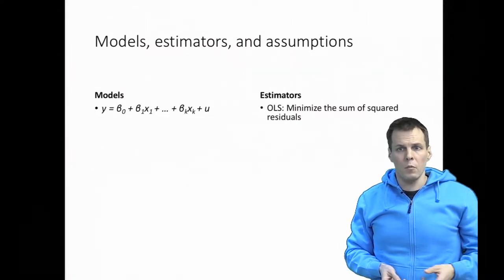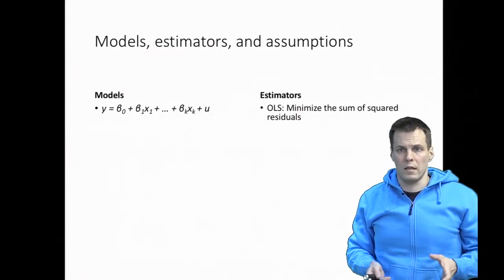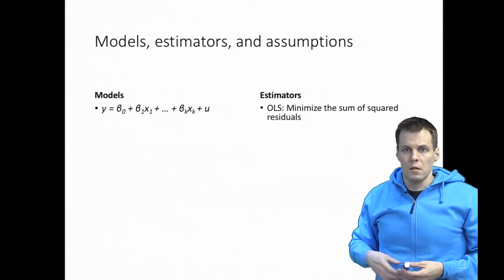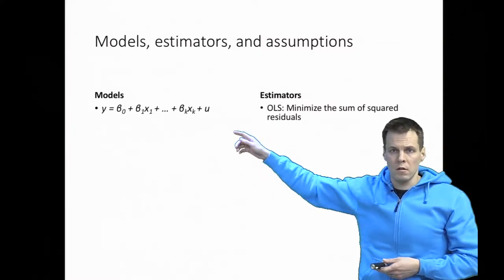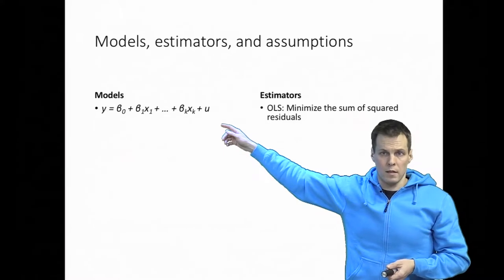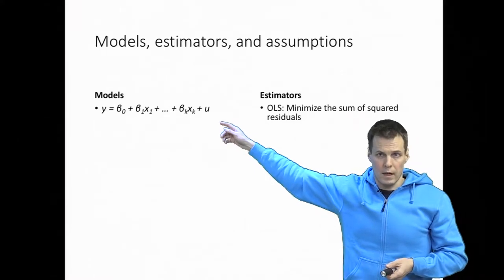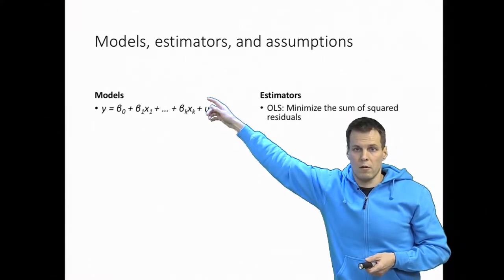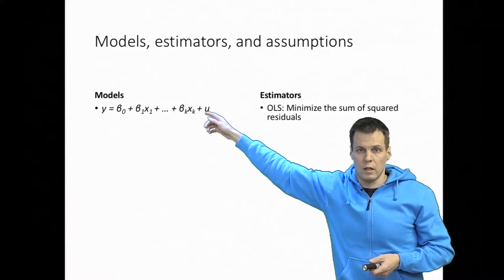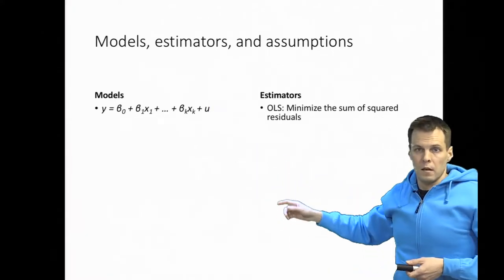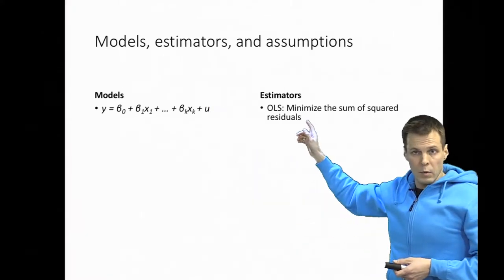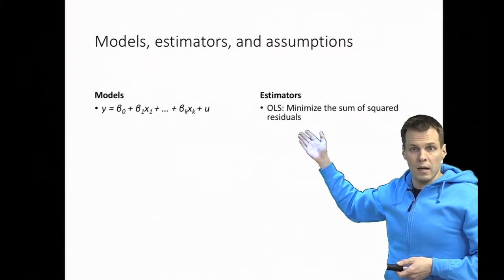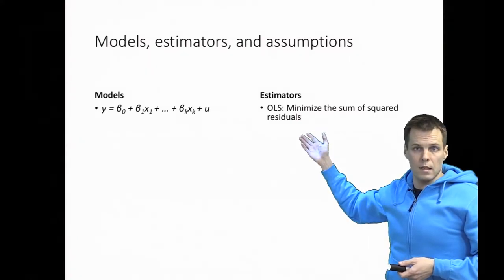Let's start with examples of models and estimators so we understand what the assumptions mean. The regression model is y as a weighted sum of the observed independent variables x, plus some error term u that the model doesn't explain. Then we have estimation principles — how do we choose the betas, and which set of betas is the best?